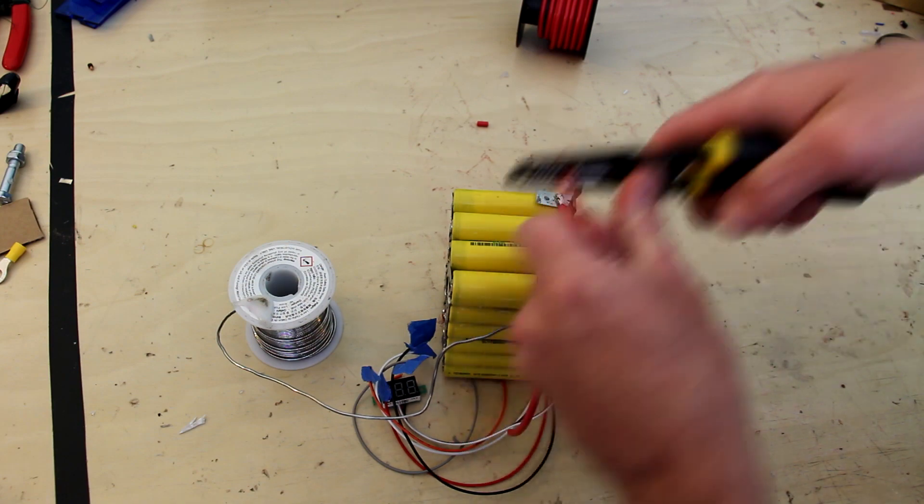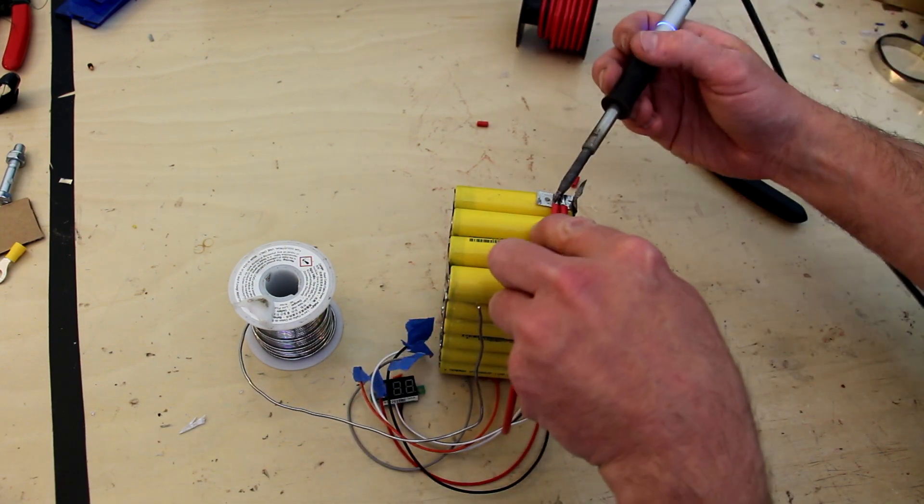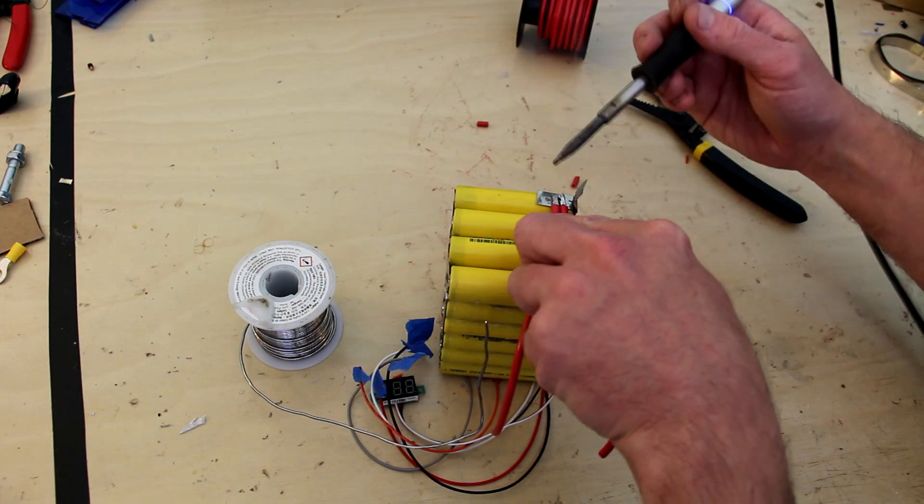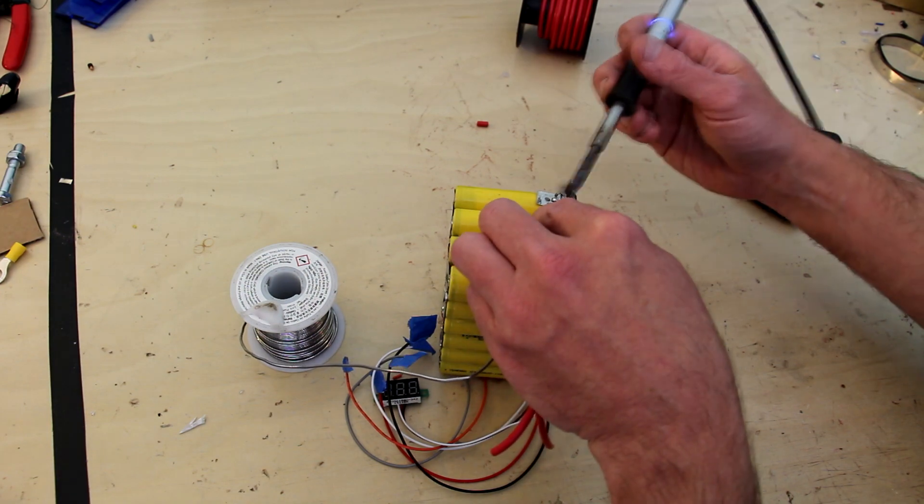Last but certainly not least, I'm connecting my power wires. For this I'm using two 12 gauge wires in parallel on each of the leads, both the positive and the negative. This will carry more than enough current to crank over just about every motorcycle.